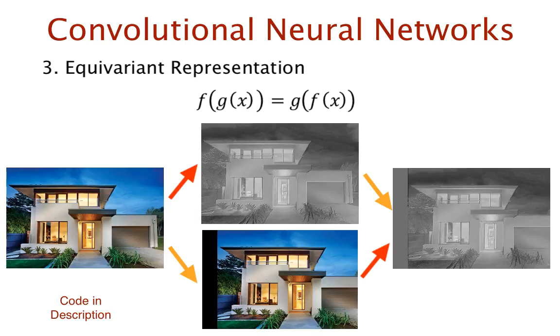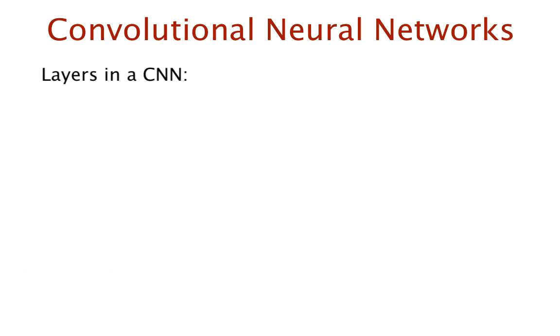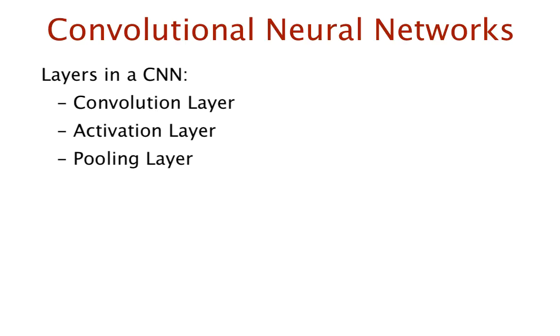Now that we understand some features of CNNs, let's take a look at the types of layers we have in a convolutional neural network. So we can broadly classify this into convolution, activation, pooling, and fully connected layers. We'll discuss these one at a time.